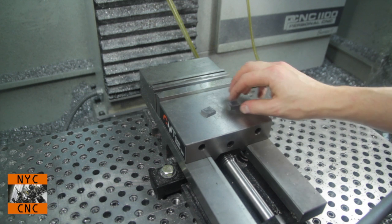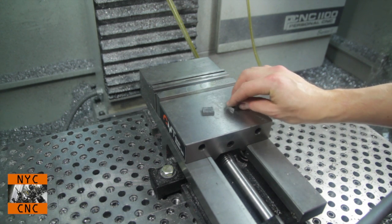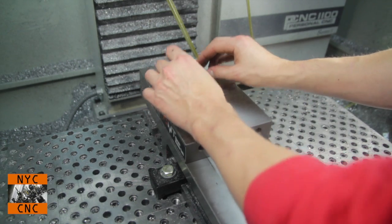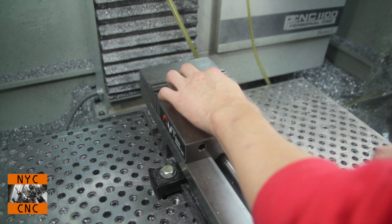We've got our two pieces. We ran a file over the top just to make sure there were no edges standing up. Now what we're going to do is put them both in the jaws and mill the backsides square.